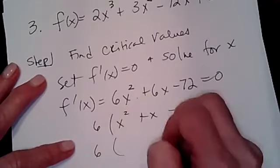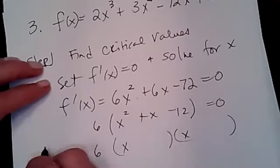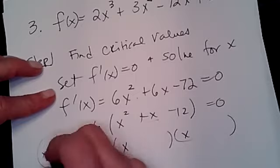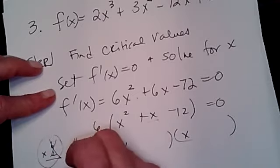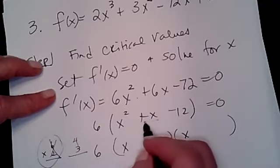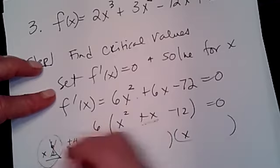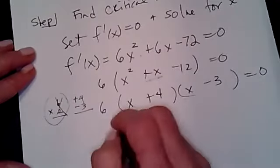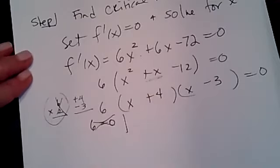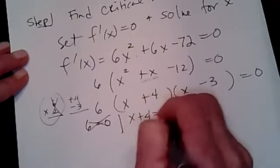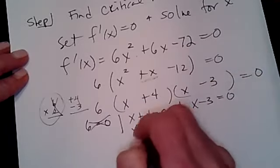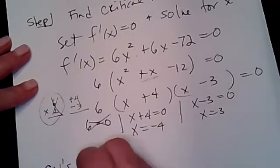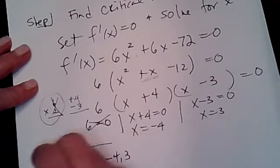Factoring x² + x - 12: I need two numbers that multiply to 12 and add to positive 1. That's +4 and -3. So I get 6(x + 4)(x - 3) = 0. Setting each factor equal to zero: the 6 gives no solution, x + 4 = 0 gives x = -4, and x - 3 = 0 gives x = 3. So I have two critical values: x = -4 and x = 3.